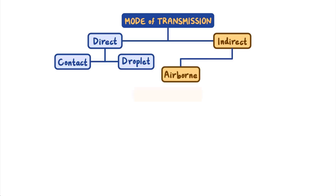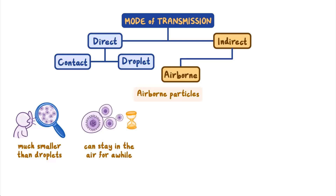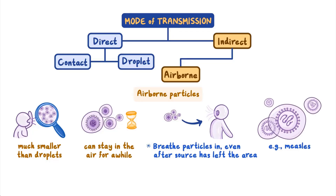Indirect airborne transmission can happen through airborne particles. These particles are much smaller than the droplets involved in direct droplet transmission and can stay afloat in the air for a while before falling to the ground. So with direct droplet transmission, the potential new host is in the direct path of the sneeze or cough. But with indirect airborne transmission, all someone must do is come into the space where airborne particles are floating and breathe them in, even after the source has left the area. Measles is an example of a disease spread by indirect airborne transmission. Respiratory particles containing the measles virus, exhaled by an infected person, can remain suspended in the air and be inhaled by a susceptible person several minutes later, leading to infection.